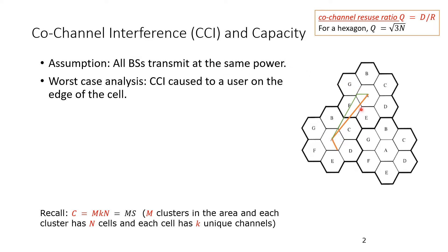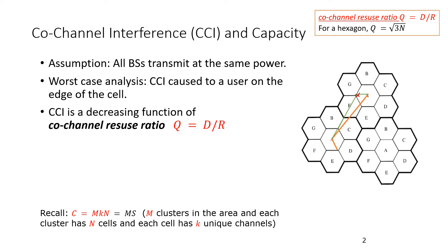Consider two interfering cells A and A. A user in one cell will receive co-channel interference from the other cell. The worst case scenario is when the user is located at the edge of the cell — farthest from their own base station and closest to the interfering station — where the received power from the serving base station is at its minimum.